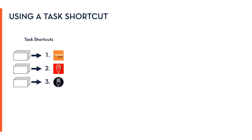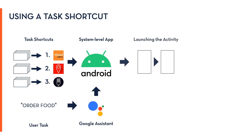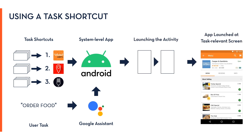To demonstrate how task shortcuts can be used, we encapsulated Savant within a system-level Android app. Android apps can restrict the activities that can be started externally from other apps, but system-level apps can bypass this restriction. Using the activity field within the task shortcut, Savant first tries to automatically launch the app at the task-relevant screen. Savant is also able to perform slot filling on the task-relevant screens through a Dialogflow agent, which extracts relevant intent-entity information from user utterances and uses it to interact with relevant UI components.